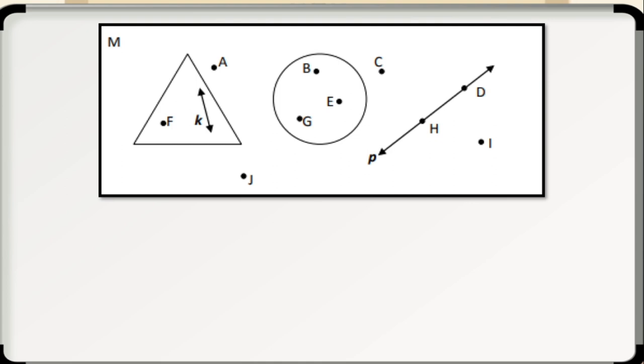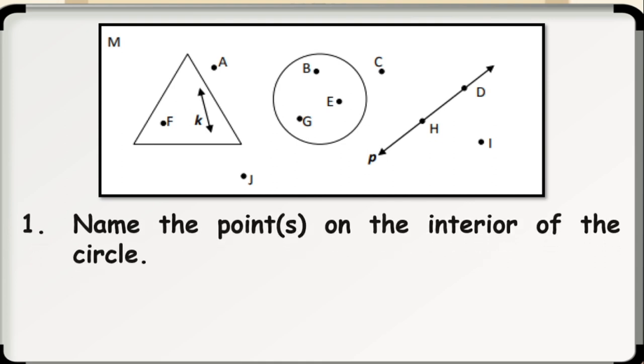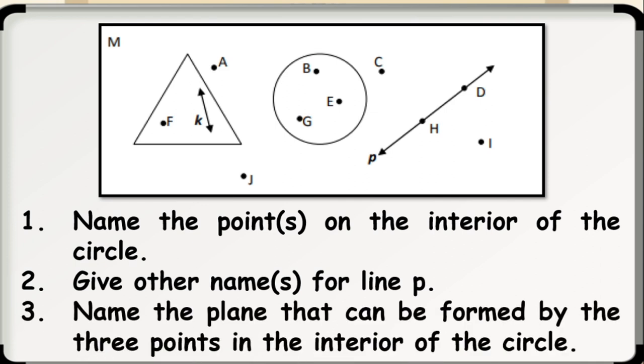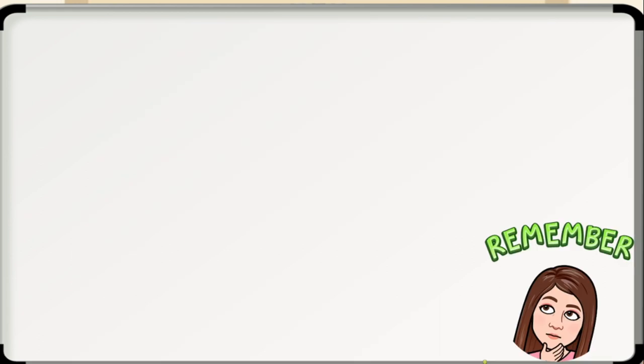The figure below shows illustrations of points, lines, and planes. For your first drill, answer the following. Number one. Name the point or points on the interior of the circle. Number two. Give other name or names for line P. And number three. Name the plane that can be formed by the three points in the interior of the circle.